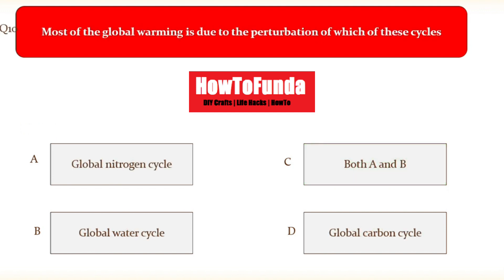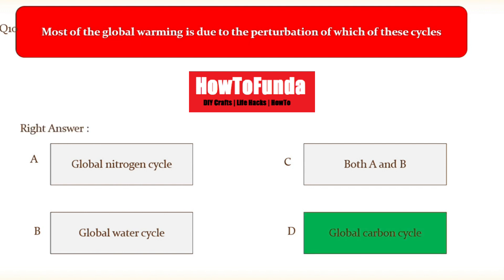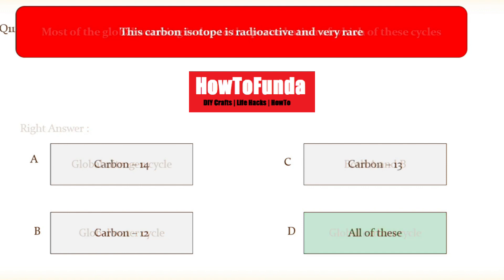Question number ten: most of the global warming is due to the perturbation of which cycle? Option A global nitrogen cycle, option B global water cycle, option C both A and B, option D global carbon cycle. The right answer is the global carbon cycle — global warming is mostly due to disturbances in the global carbon cycle.